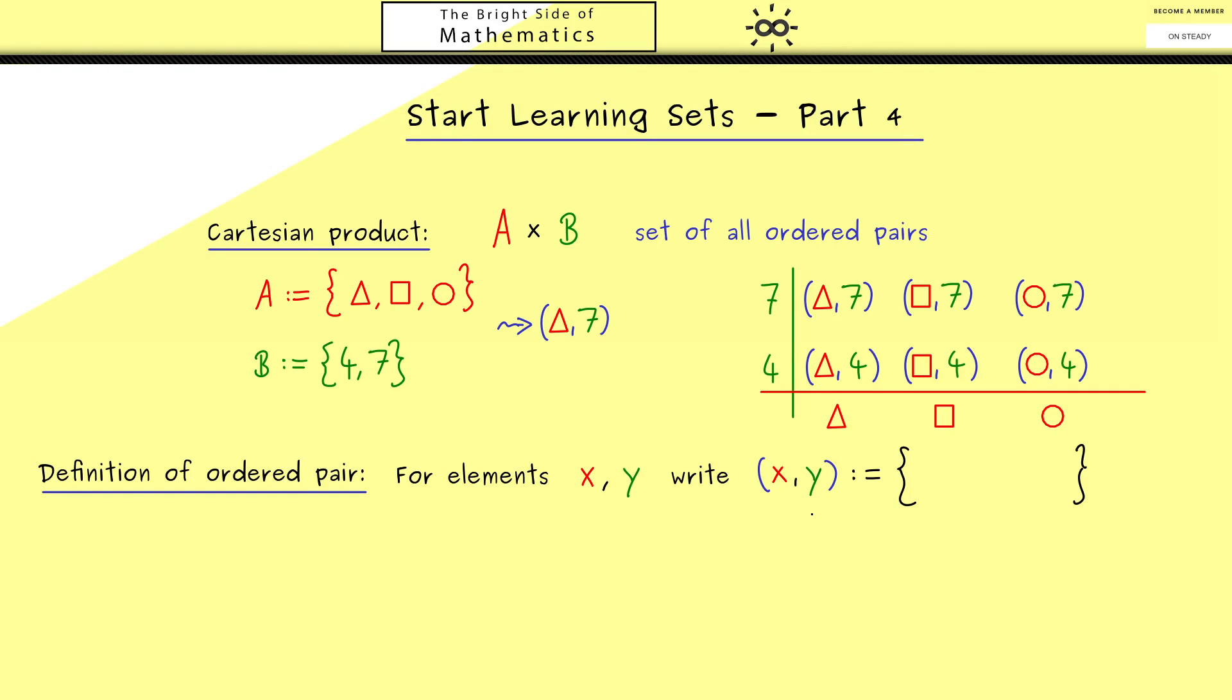Of course there are different possibilities to do that, but I show you the one that is most common. One element of the set is the set that contains only x as an element, and the other element is a set with two elements, namely x and y. And there you see the encoding here. The number of elements here tells us the position.